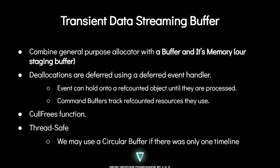We work with our staging memory using a transient data streaming buffer. What this tool does is combine a general purpose allocator with the staging memory so that you can allocate blocks within your staging memory. The allocations are deferred using a deferred event handler, which prevents dropping the allocation when the transfer is in progress. The events can hold on to ref-counted objects until they are processed, including command buffer resources, so we make sure we don't free resources used by pending or future submissions. This tool is thread safe, noting that we may use a circular buffer instead of a general purpose allocator if there was only one timeline.